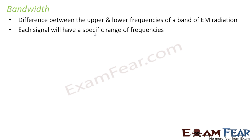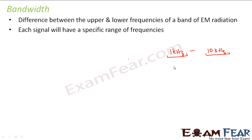Each signal will have a specific range of frequencies. For example, if a signal operates between 1 kHz and 10 kHz, then 1 kHz is the lower frequency and 10 kHz is the upper frequency. Bandwidth equals upper frequency minus lower frequency — that means 10 minus 1, which is 9 kHz. That is our bandwidth.